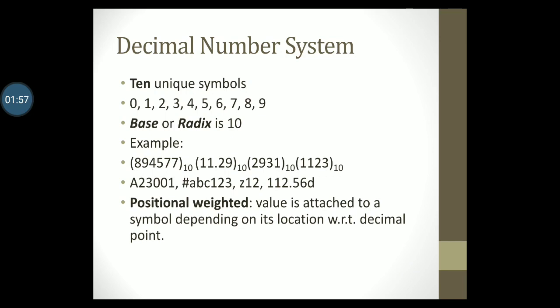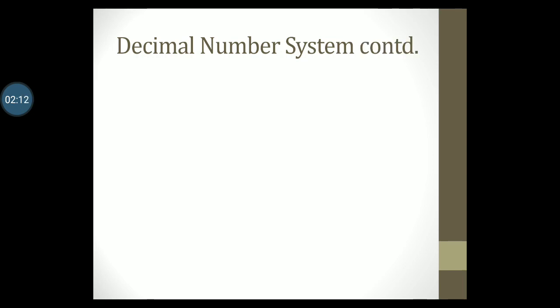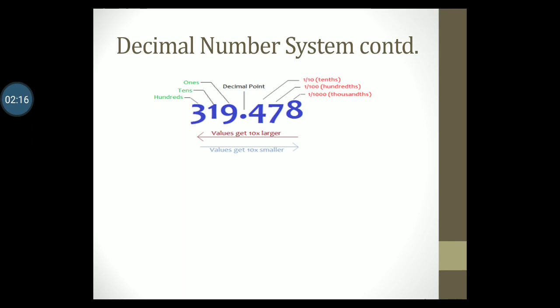Decimal numbers are positional weighted. That is, a value is attached to a symbol based on the location from the decimal point. Let us understand this with an example. Take the number 309.478. The number 3 has the 100th place, the number 1 is in the 10th place, and the number 9 is in the units place. Similarly, the number 4 is in the 1 by 10th place, the number 7 is in the 1 by 100th place, and number 8 is in the 1 by 1000th place.